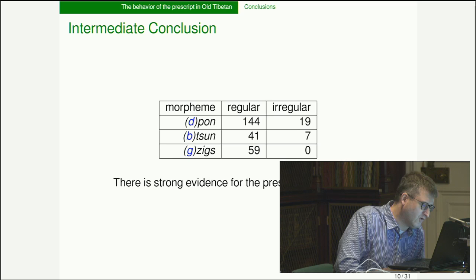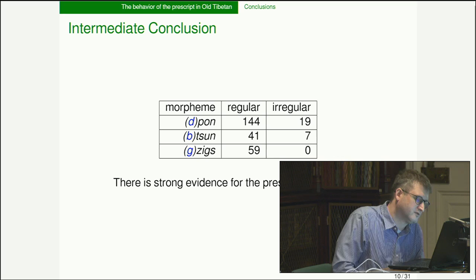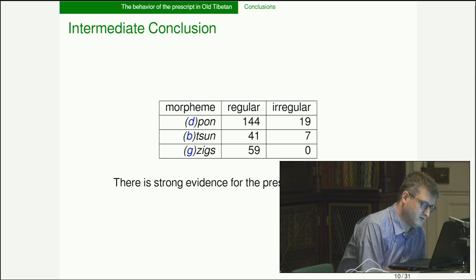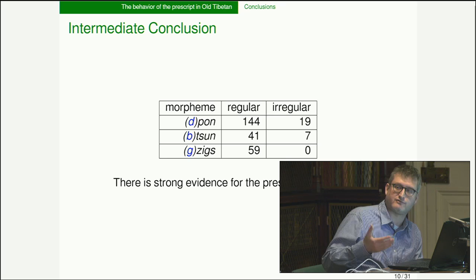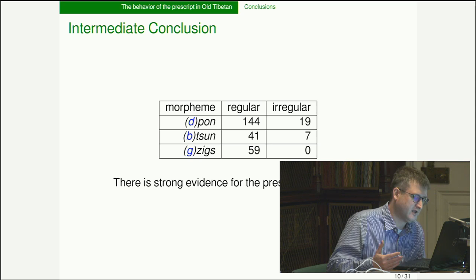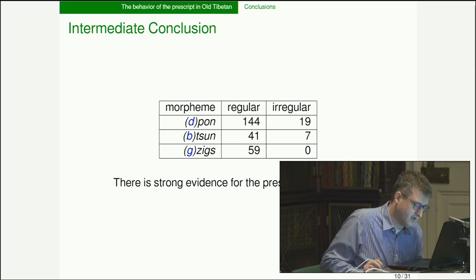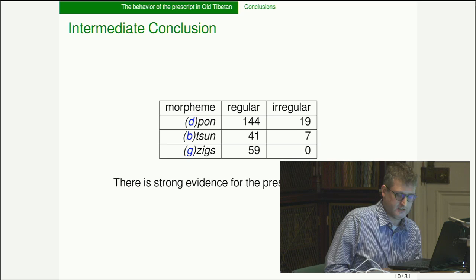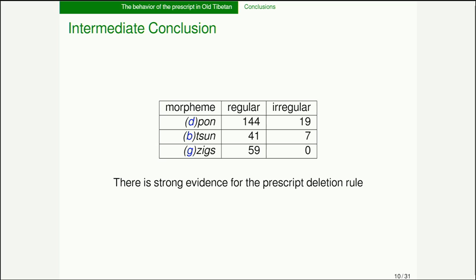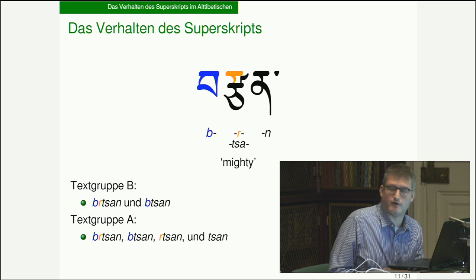For 'zik' — leopard — in the name 'snyah gziks,' you keep the 'g' after a vowel word-internally but delete the 'g' word-internally after a consonant. Looking at all these morphemes throughout the Old Tibetan documents, the pattern is: keep the prescript after vowels and word-initially; delete the prescript after consonants word-internally. There are exceptions, but the evidence for this pattern is quite strong.